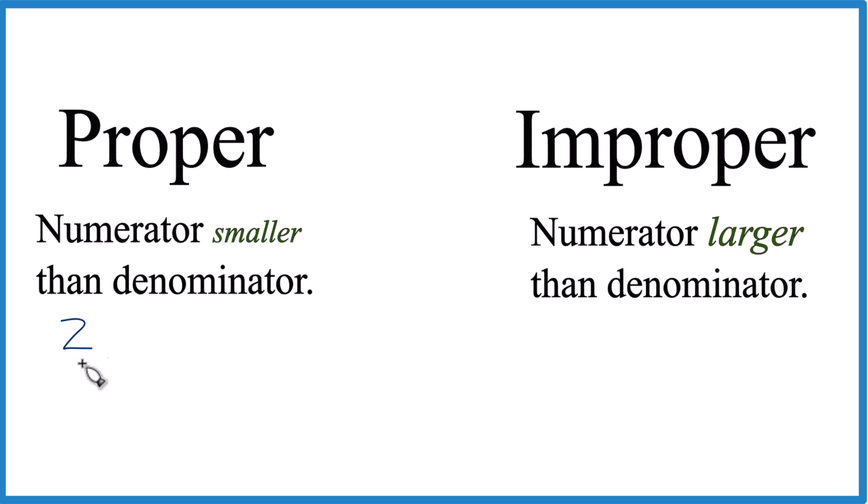So 2 fifths, that would be a proper fraction because 2 is smaller than 5. Or 3 fourths, that's proper. 3 is smaller than 4. The numerator, smaller than the denominator. Or something like 7 eighths, it's also a proper fraction.